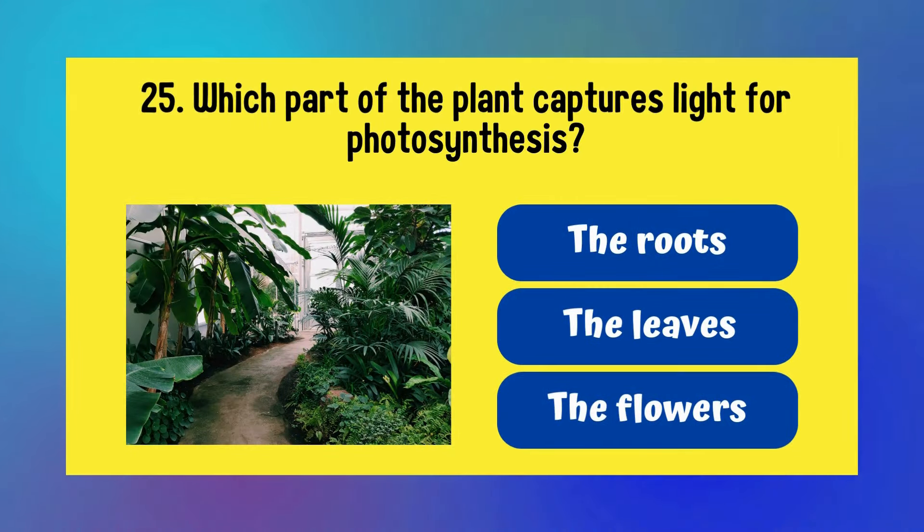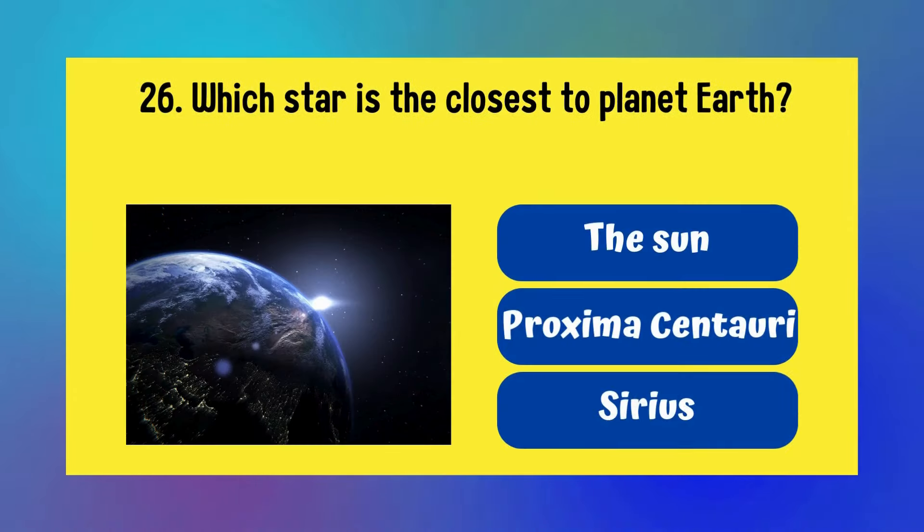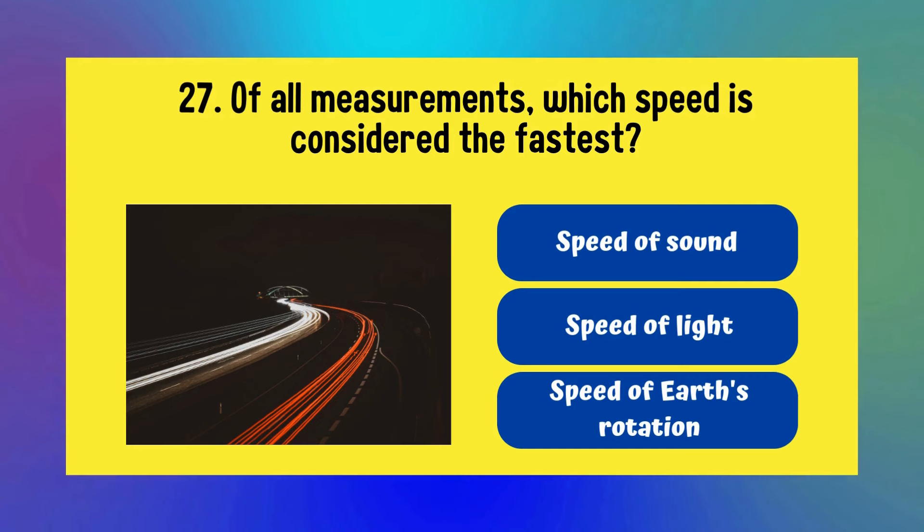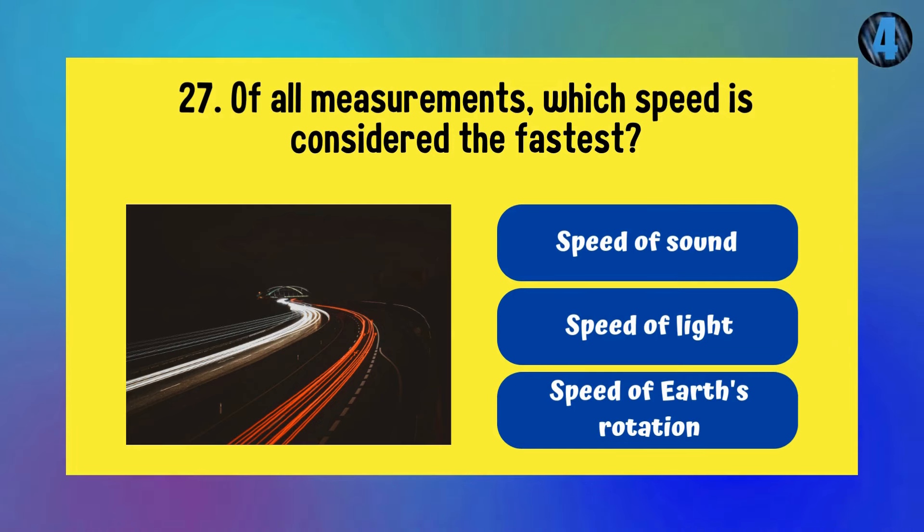Which part of the plant captures light for photosynthesis? The roots, the leaves, or the flowers? Answer is the leaves. Which star is the closest to planet Earth? The Sun, Proxima Centauri, or Sirius? Answer is the Sun. Of all measurements, which speed is considered the fastest? Speed of sound, speed of light, or speed of Earth's rotation? Answer is speed of light.